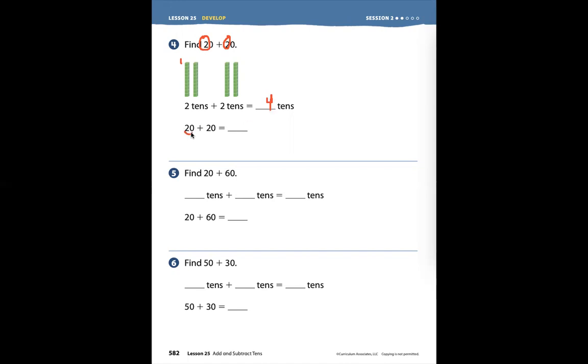So 20 plus 20 is, so what is the value of these 4 tens? We have to count by tens. So 10, 20, 30, 40.